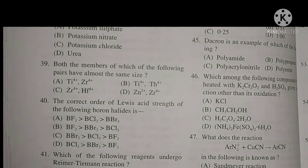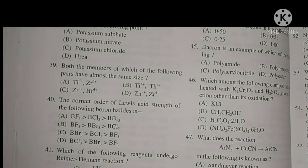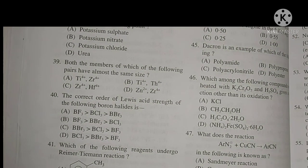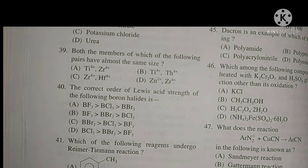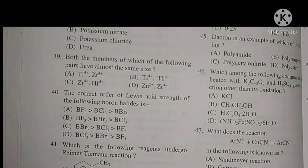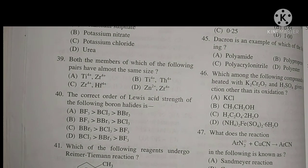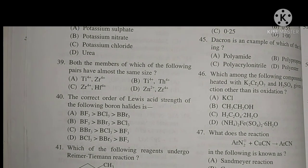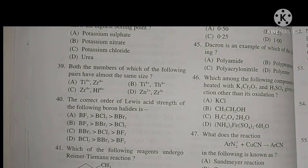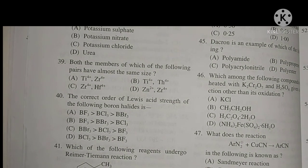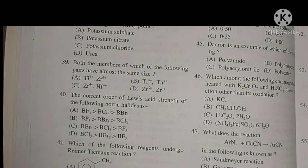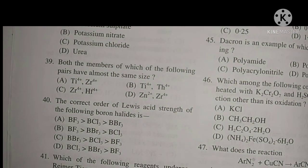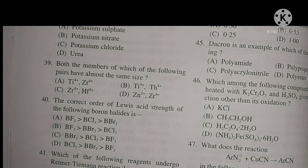Question number 39: Both members of which of the following pairs have almost the same size? This is about lanthanide contraction. The answer is zirconium and hafnium, option C. I will take this completely in detail. I will explain why the size of both are almost the same.